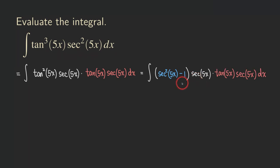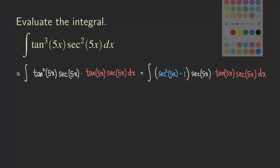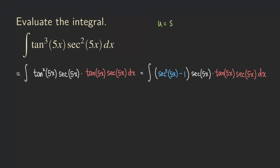Now we make a u-substitution: we let u equal secant of 5x. The reason is that du will give us a tangent and a secant. The derivative of secant 5x is 5 secant 5x times tangent 5x dx — the factor of 5 comes from differentiating the inner function 5x by the chain rule. Since we have secant 5x times tangent 5x but no factor of 5 in our integral, we rearrange to get 1 over 5 du equals secant 5x times tangent 5x dx.